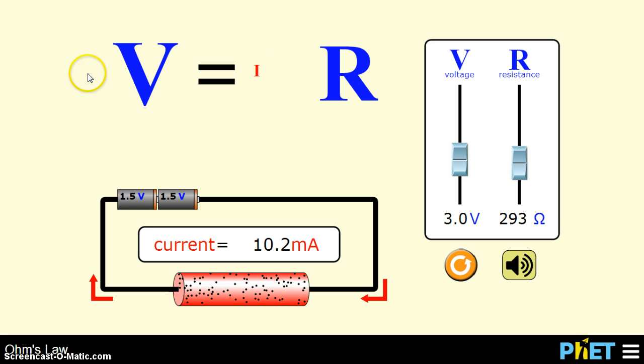Simply put, if the voltage is constant, in this case at 3 volts, current and resistance are inversely proportional. Okay. Good luck.